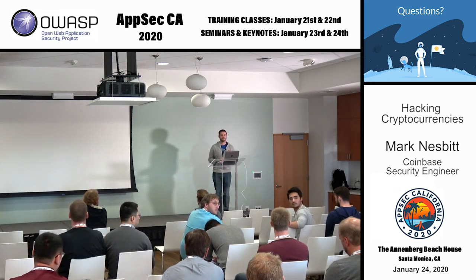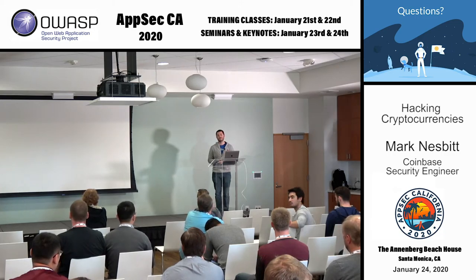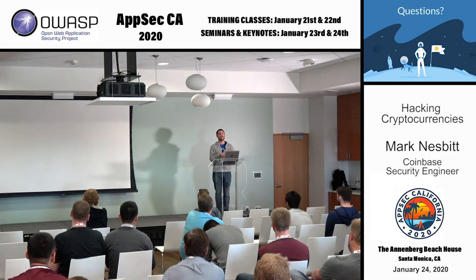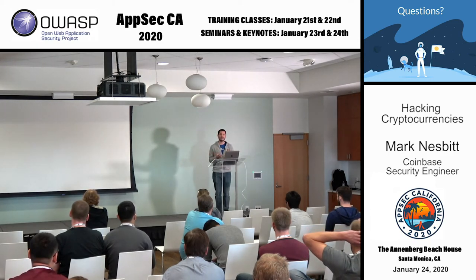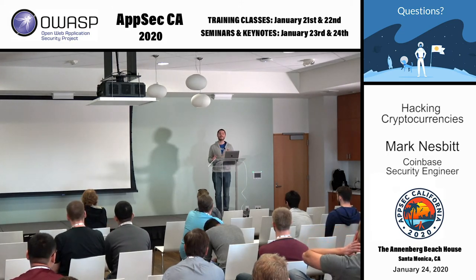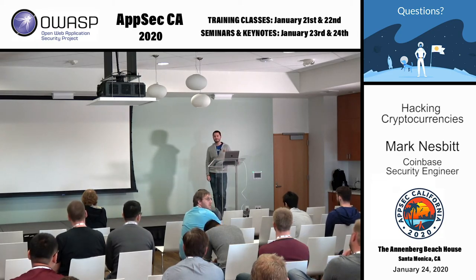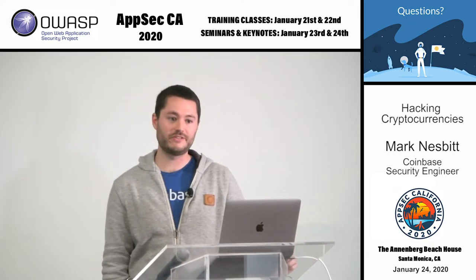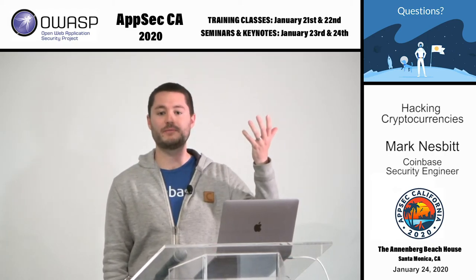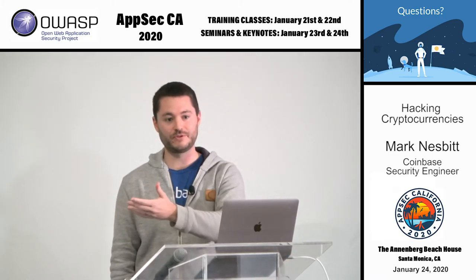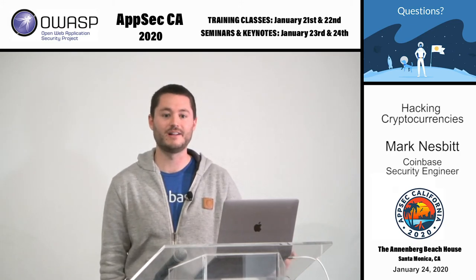Q: Do orphaned transactions that aren't double spends get put back on the network, or are they gone forever? A: They get put back on the network — that's actually why it's important to create both T and T prime. If you just orphan T, it is still potentially valid and could be included in the future, so the attacker never actually got rid of it, just delayed it. But if they create T prime, that makes T forever invalid and it could never be included. T would not be in a block, but sitting in a pending queue, and any miner could choose to include it in a future block. If you create T prime, then T is now invalid and will never be included.